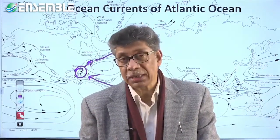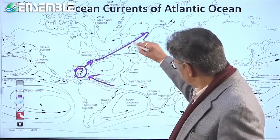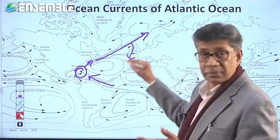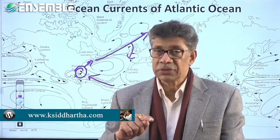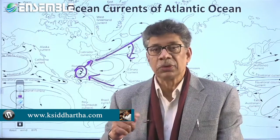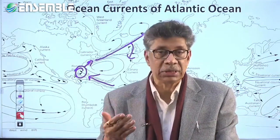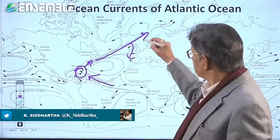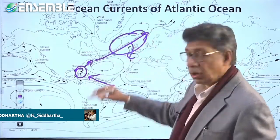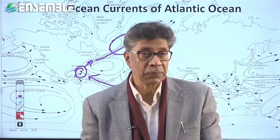From the Grand Banks, the Gulf Stream is deflected eastward under the combined influence of the westerlies and the rotation of the Earth. It then crosses the Atlantic Ocean as the North Atlantic Drift.